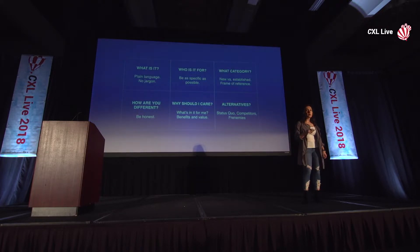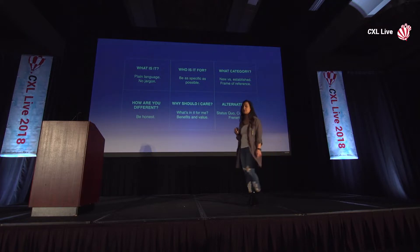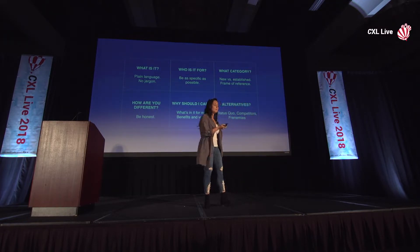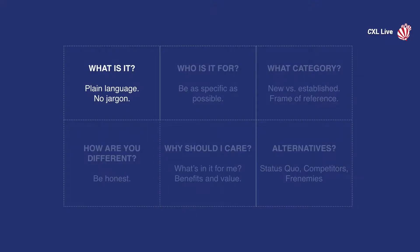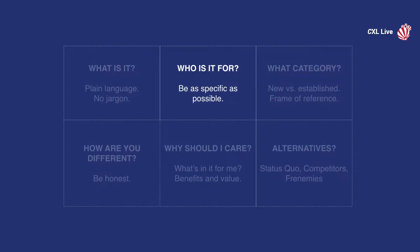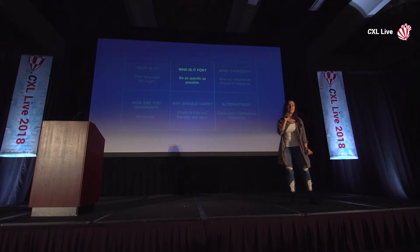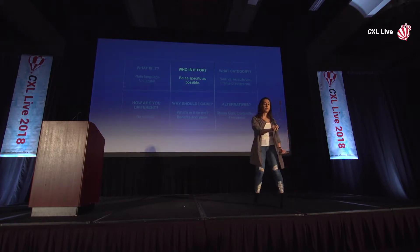I'm going to share a framework with you. Number one: really explain what the thing is in the first place — and yes, that means no unicorns, rainbows, or ice cream. Number two: really be specific about who it's for. Everybody here knows that the entire world is not their target market, but most of us act like they are. So get really specific here.